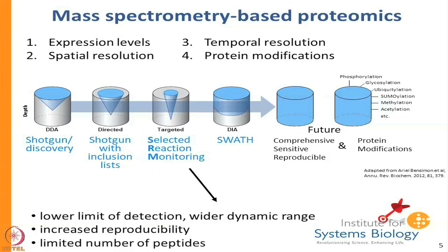Almost all of these techniques that require precursor information generally rely originally on DDA experiments. There are a number of ways you can get deeper into a DDA experiment — by doing fractionation, longer gradients, different cell types, or subcellular fractionation. Basically by really pushing this technique, you come up with inclusion lists for SRM and for SWATH as well.